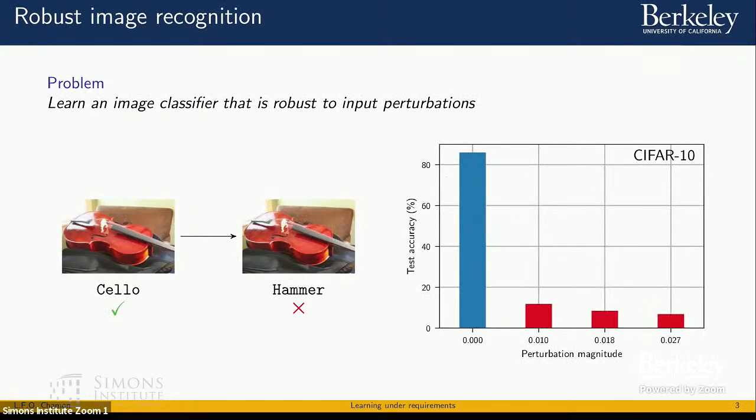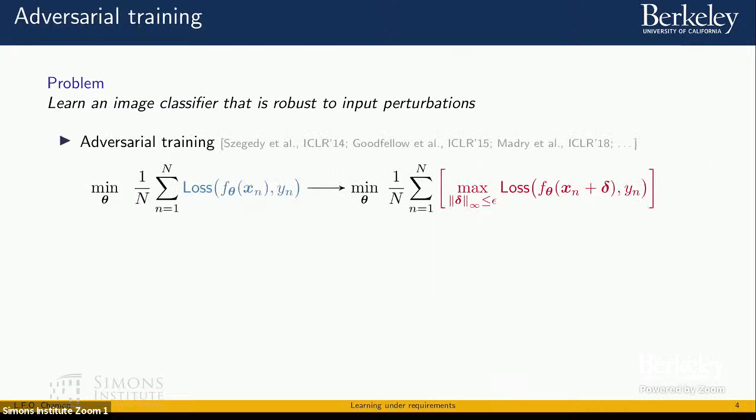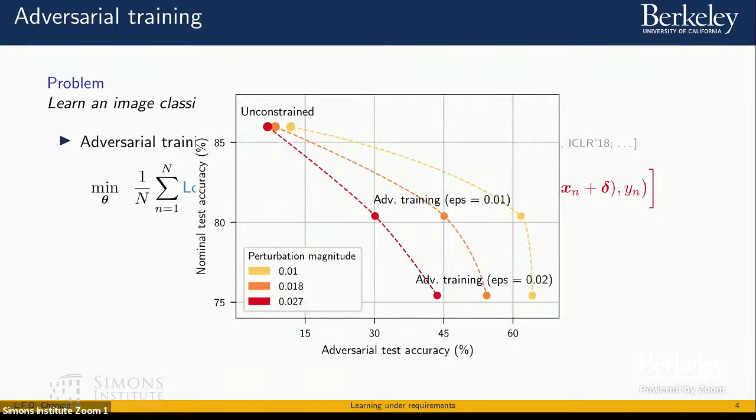Image recognition is a task that we became exceedingly good at solving. However, the solutions that we obtain are typically quite brittle. Very small perturbations of the input can lead to drastic changes in the accuracy of the classifier that we obtain. And the typical way to address this problem is to use this technique known as adversarial learning.